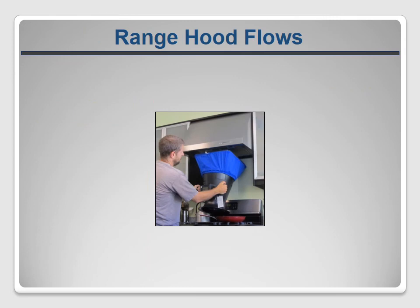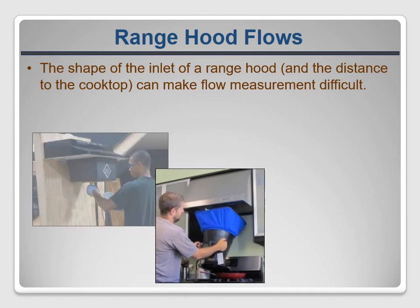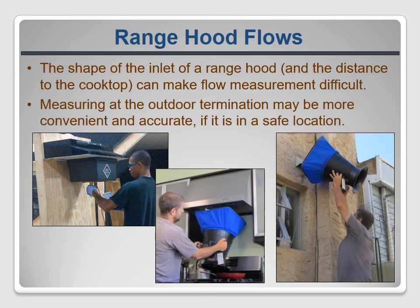Range hood flow rates can be particularly challenging to measure because of the awkward shape of the opening and sometimes limited distance between the hood and the cooktop. One potential solution is to carry a thin plywood template that covers the underside of a typical 30-inch range hood, which should work on at least three-quarters of the hoods you'll encounter. In other cases it may be necessary to go outside and measure where the air exits the building, assuming it's not on the roof — but remember you can't do this with the exhaust fan flow meter box, as it's not accurate with air flowing in that direction. The flow hood really gives you the most flexibility if you can afford the initial cost.